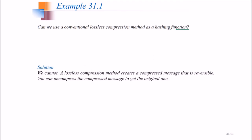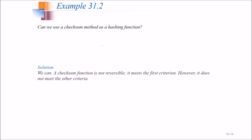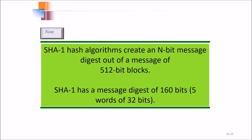Can we use a conventional lossless compression method as a hashing function? No, we cannot. A lossless compression method creates a compressed message that is reversible — you can uncompress it to get the original. Can we use a checksum method as a hashing function? A checksum function is not reversible, so it meets the first criteria. However, it does not meet the other criteria required for a hashing function. SHA-1 creates a 160-bit message digest — that is 5 words of 32 bits each — out of a message divided into 512-bit blocks.